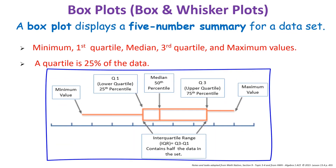Looking at a box and whisker plot, you can see four pieces — each piece is 25% of the data. Notice the key parts: the endpoints are your minimum and maximum, the median is inside the box, and the ends of the box are the upper and lower quartiles.